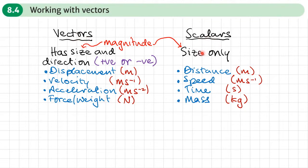Scalars, which only have size, won't tell you the direction, just the size. Distance tells you how far to go, but not what direction. Speed, how fast to go, but not the direction. Time, well, time can only go in one direction anyway. And mass, it'll just tell you the mass of something, but it won't tell you which direction that mass is acting in.